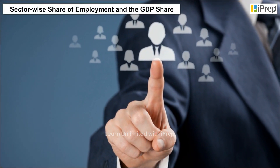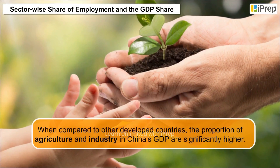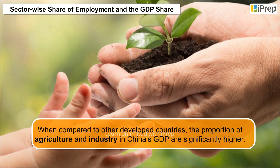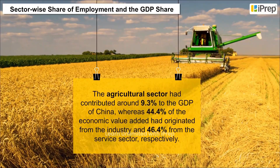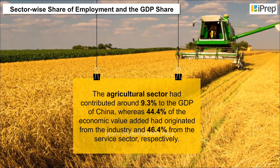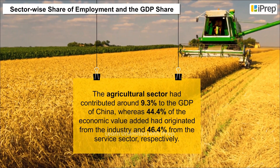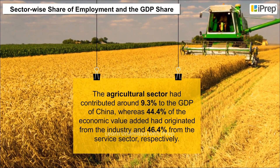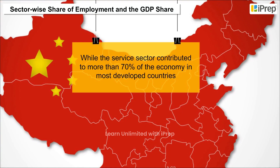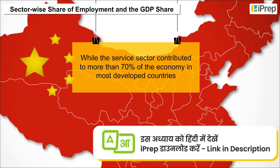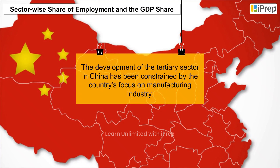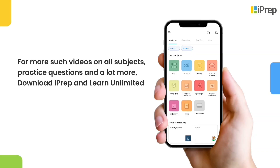Regarding sector-wide share of employment and GDP: when compared to other developed countries, the proportion of agriculture and industry in China's GDP are significantly higher. The agricultural sector contributed around 9.3 percent to China's GDP, whereas 44.4 percent of economic value added originated from industry and 46.4 percent from the service sector. While the service sector contributes more than 70 percent of the economy in most developed countries, the development of the tertiary sector in China has been constrained by the country's focus on manufacturing industry.